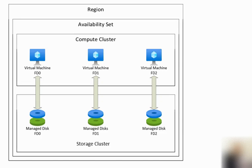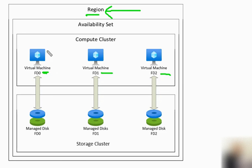In this screen we have the availability set, which exists in a single region. Under the availability set we have multiple virtual machines, each belonging to a different fault domain — each fault domain has its own power supply and network switch. At least one VM lies in fault domain 0, one in fault domain 1, and one in fault domain 2, ensuring all VMs do not go down together. Storage clusters are also distributed in their respective fault domains.